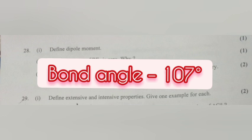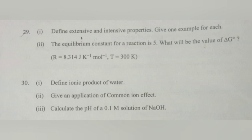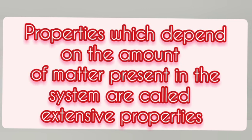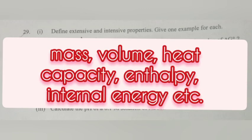Question 29.1: Define extensive and intensive properties. Give one example for each. Answer: Properties which depend on the amount of matter present in the system are called extensive properties. Examples: mass, volume, heat capacity, internal energy.